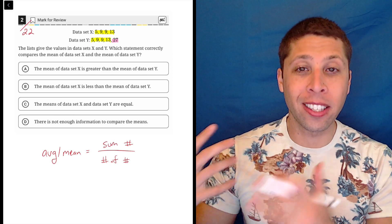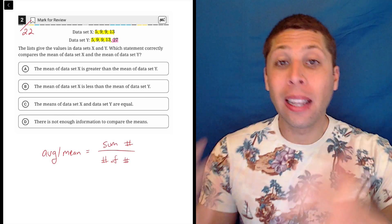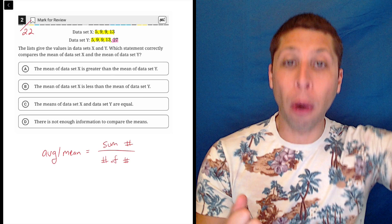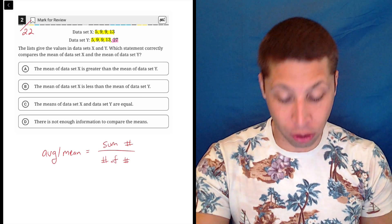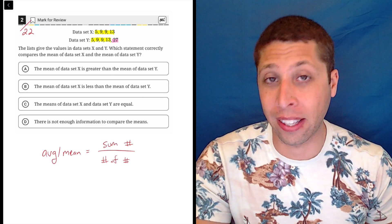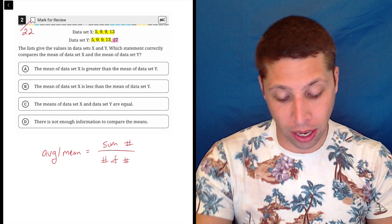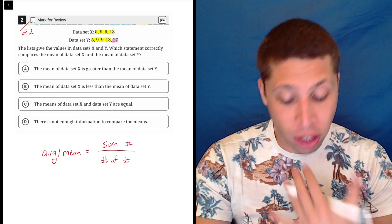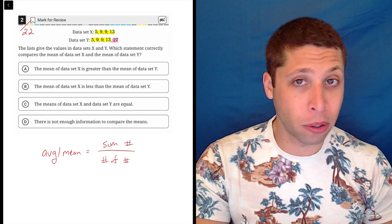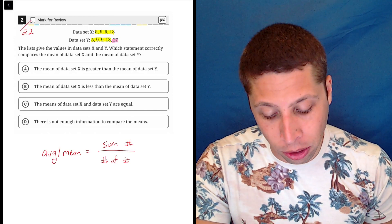And then data set Y has this extra number 27 that is much larger than all the others. So what's going to happen? Well, if that's the exact same data set plus a bigger number, it's going to pull the average up. It's going to increase the overall value of the set, and that's what mean is kind of measuring. So we should be able to get that just by how different that number is from all the others and the similarity between the two sets.